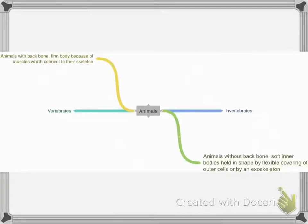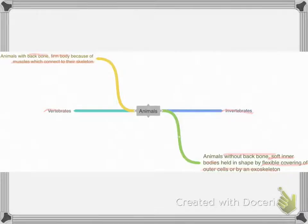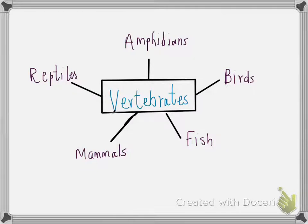In the animal kingdom there are two categories: vertebrates and invertebrates. Vertebrates are animals with a backbone and have a firm body because their muscles connect to their skeleton. Invertebrates are without a backbone; they have a soft inner body held in shape by a flexible covering of outer cells or a hard exoskeleton.